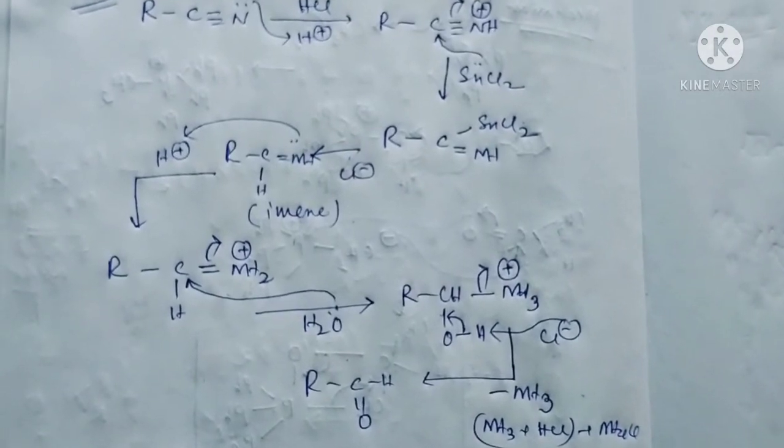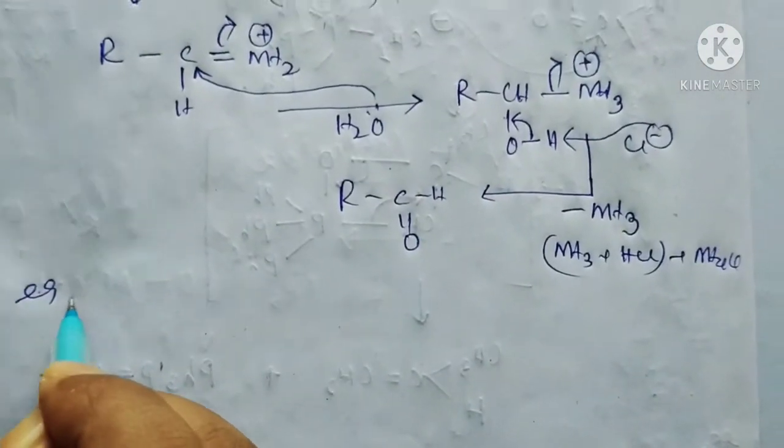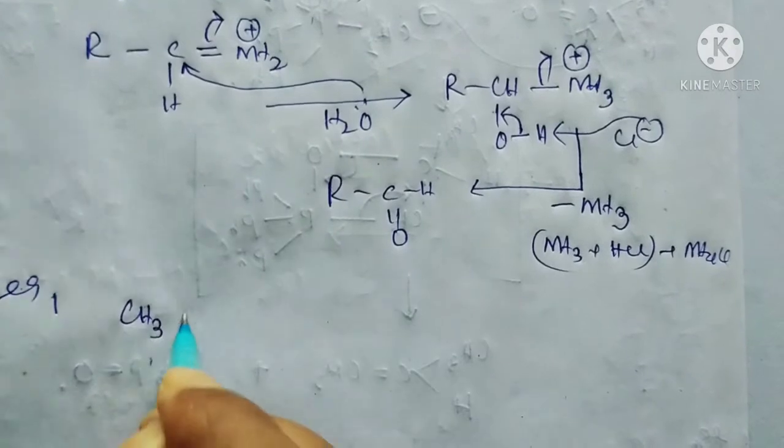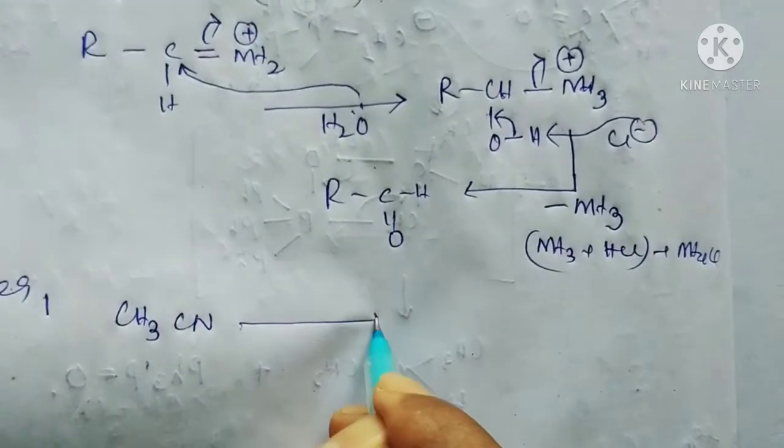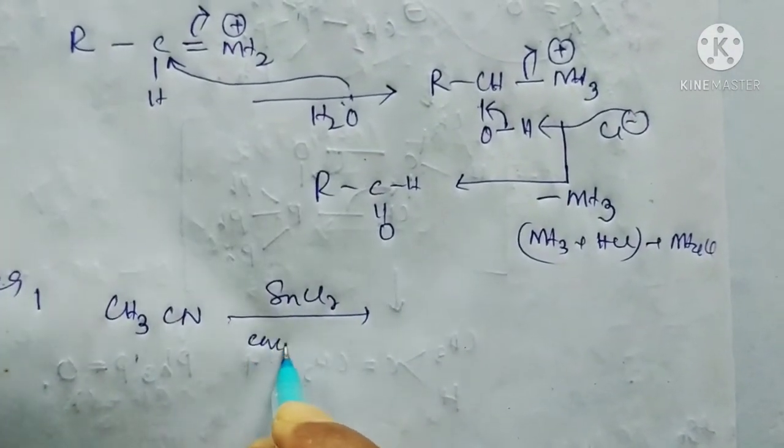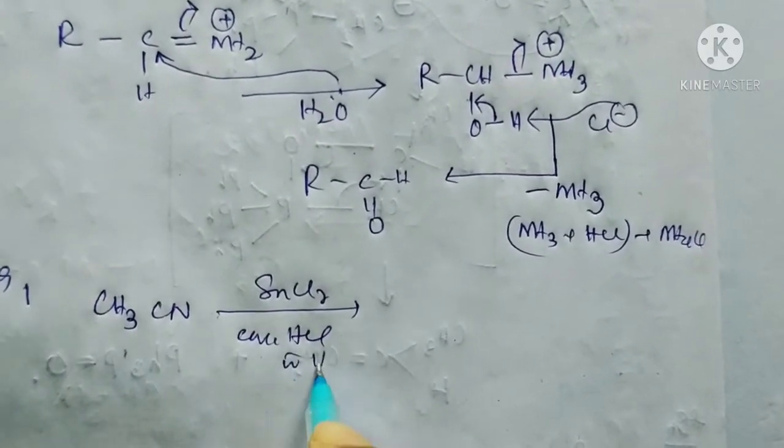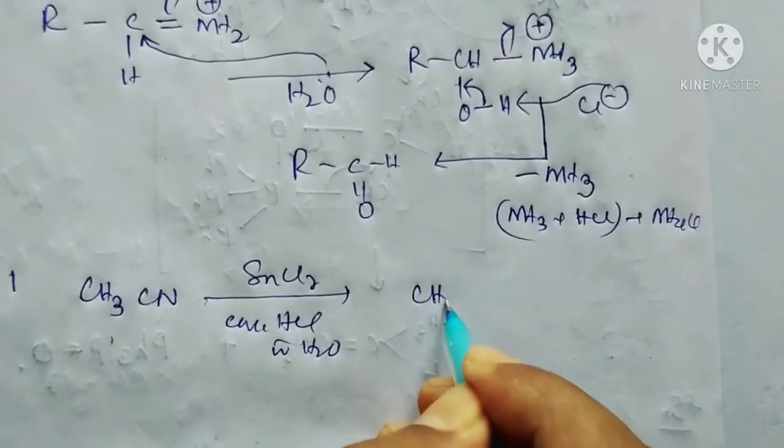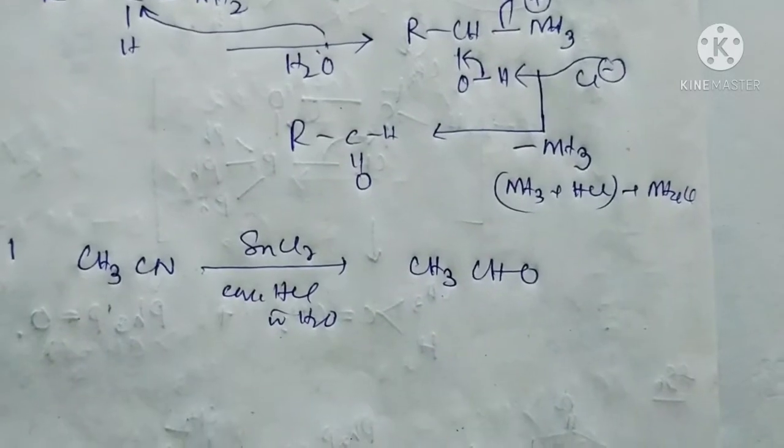As example number one, from methyl cyanide in presence of SnCl2 and concentrated HCl in water, it produces acetaldehyde.